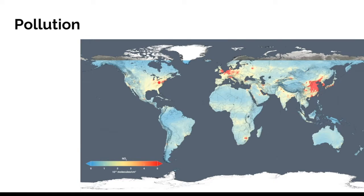However, there's also a lot of people in India and Africa, and they aren't producing the same amount of pollution. Why might that be? It may come down to how people live. Some countries have good laws that prevent as much pollution from being put out. And sometimes people live in a different way, where they don't burn as many fossil fuels and don't have as many factories, and therefore don't cause as much pollution.